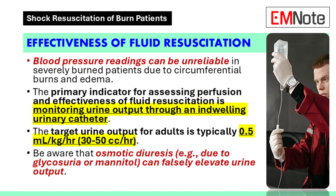Blood pressure can be really unreliable in patients with severe burns due to edema and the circumferential nature of the burns. The best indicator that fluid resuscitation is working is urine output. We need an indwelling urinary catheter and close monitoring. For adults, our target urine output is 0.5 milliliters per kilogram per hour — or 30 to 50 cc's per hour. Be careful about osmotic diuresis from high blood sugar or mannitol, which can make urine output appear falsely elevated.